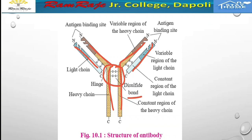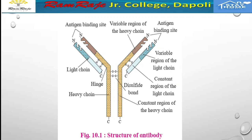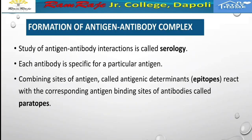So to summarize the antibody structure: there are two regions — variable region and constant region. Next is the formation of the antigen-antibody complex. This antigen-antibody interaction is called serology.